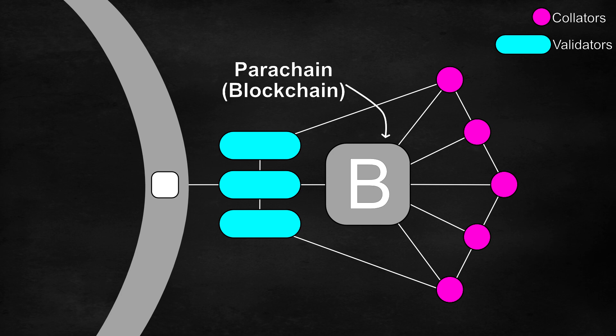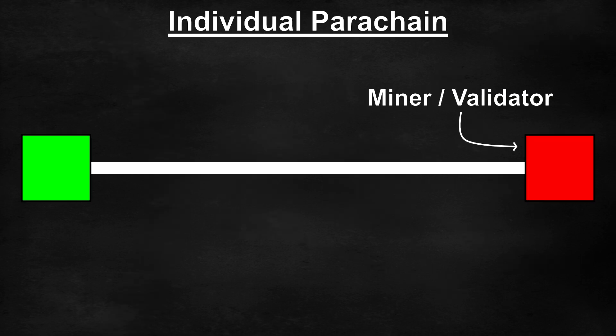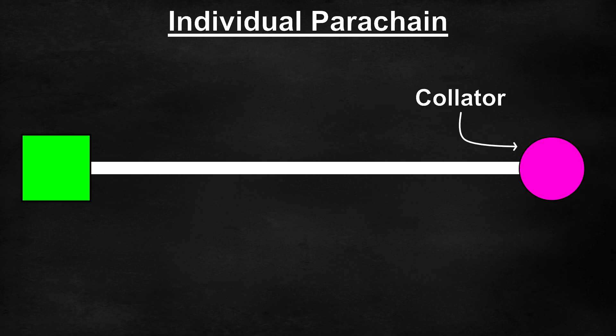This represents one of the parachains and we will be looking at the role of a collator in the parachain. In our example model of a blockchain that we previously went over, the red square represented a miner or a validator. For this parachain example, let's replace this with a collator.